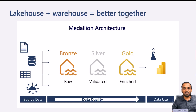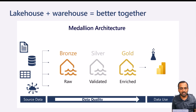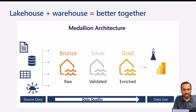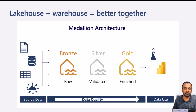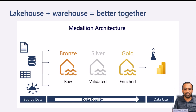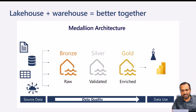Lakehouse plus warehouse equals better together. We can build a medallion architecture on top of that. We bring raw data from different sources into one layer, then validate and clean it up a bit into a silver layer, then build a warehouse to create a gold warehouse. From that we can build machine learning models or build Power BI on top of that. We'll discuss more about that in the medallion architecture video series.